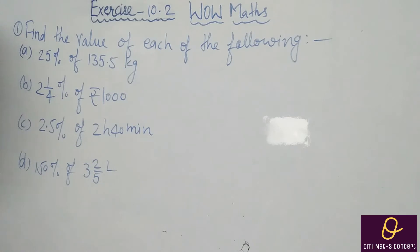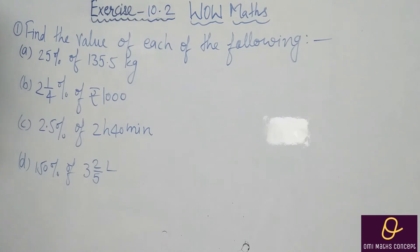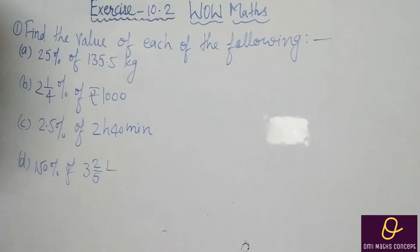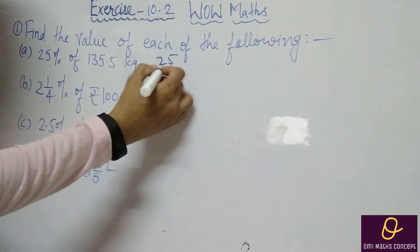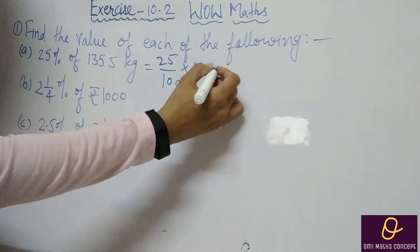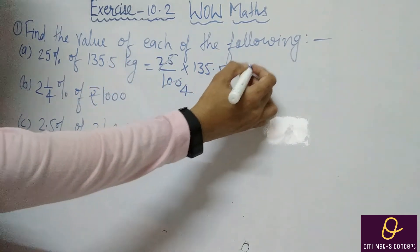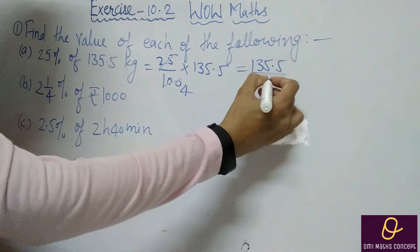Find the value of each of the following. Part A is 25% of 135.5 kg. So how will we solve? First we will remove the percentage. To remove percentage we will divide by 100. We should always remember that whenever we remove a percentage, we divide by 100. So let's write 25 divided by 100, and 'of' means multiply by 135.5.